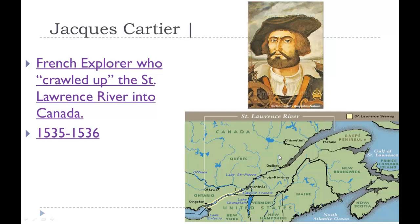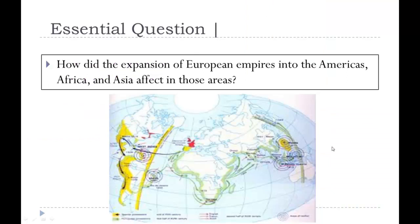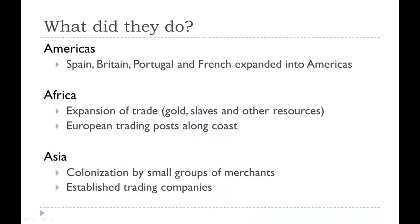So how did this new European expansion affect the Americas, Africa, and Asia? In the Americas, Spain, Britain, Portugal, and France all expanded. Spain took most of what is today Mexico, Central America, and much of South America. The British took a lot of North America, especially the east coast. Portugal took what is currently Brazil. France expanded into what is now Canada and west of the Mississippi.